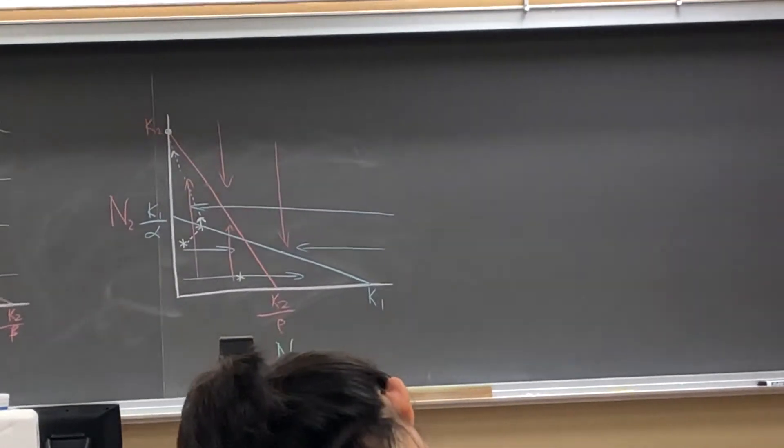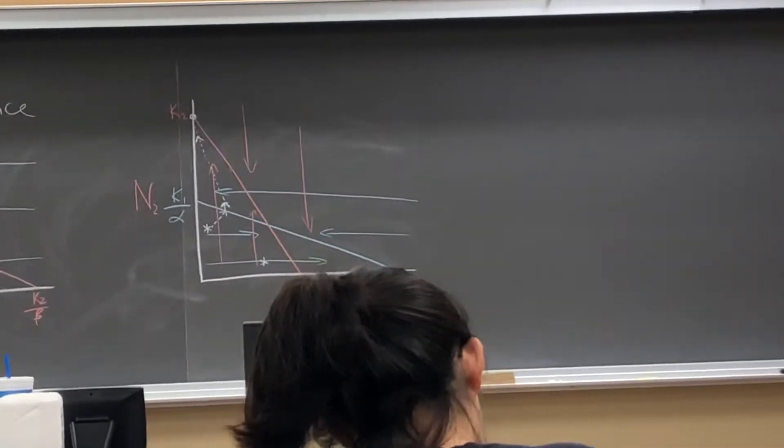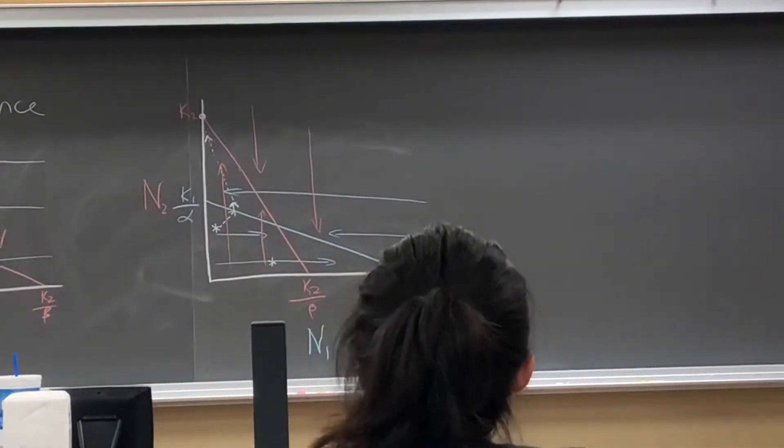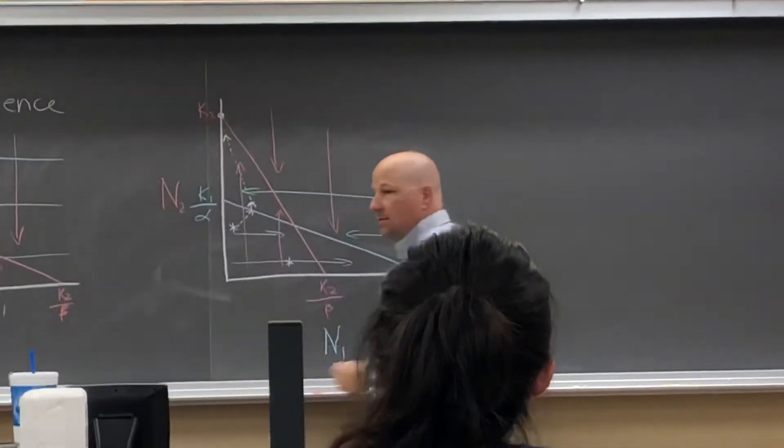And when we get to that point, what is the population size of species 1? Zero. So in this case, species 1 has been competitively excluded.